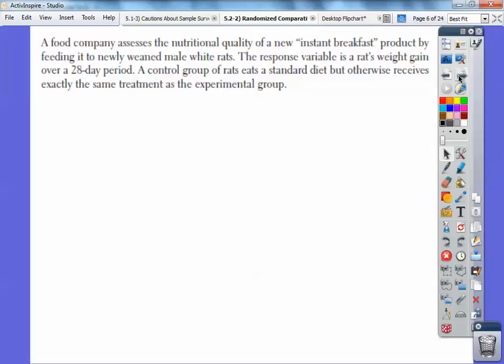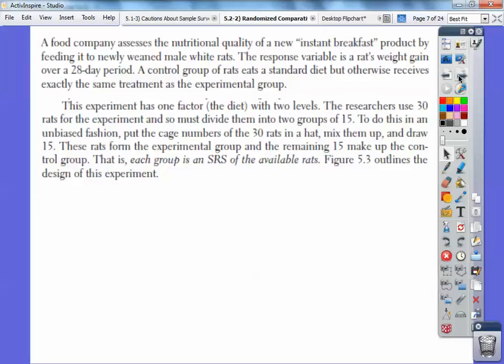A food company assesses the nutritional quality of a new instant breakfast produced by feeding it to newly weaned male white rats. The response variable is the white rats weight gain over a 28 day period. The control group of rats eats a standard diet but otherwise receives exactly the same treatment as the experimental group who's eating the instant breakfast. So this experiment has one factor which is the diet of the two levels. One gets the instant breakfast and one gets the old diet that they've always gotten.